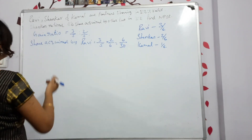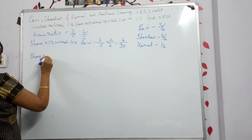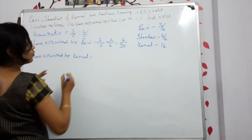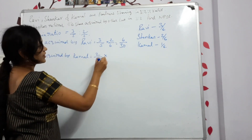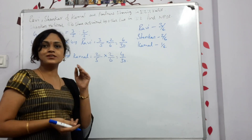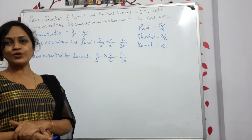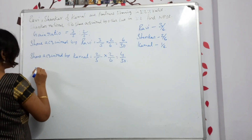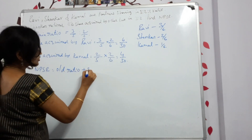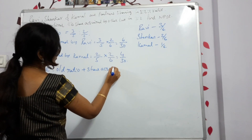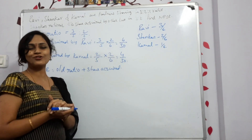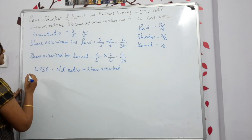Share acquired by Kamal: gain ratio 2/5 multiplied by Shankar's share 2/6 = 4/30. Now find the new profit sharing ratio (NPSR) using the formula: New ratio = Old ratio + Share acquired. Let's find it for Ravi first.